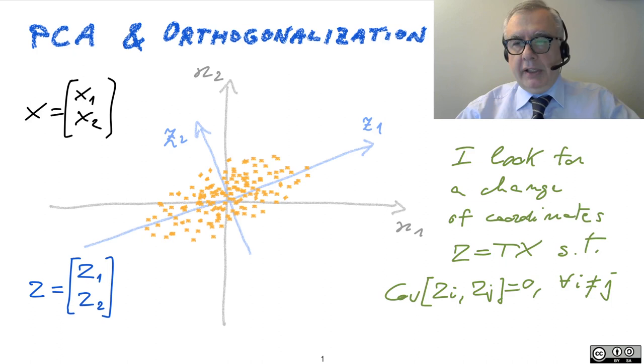And of course, this is the scatter plot of positively correlated random variables. And my goal is finding a change of coordinates that I will write as Zeta equal TX. And as a matter of fact, this transformation is going to be a rotation. So I'm going to rotate my variables in such a way that the new variables Zeta1 and Zeta2 are uncorrelated. This is what principal component analysis actually does.